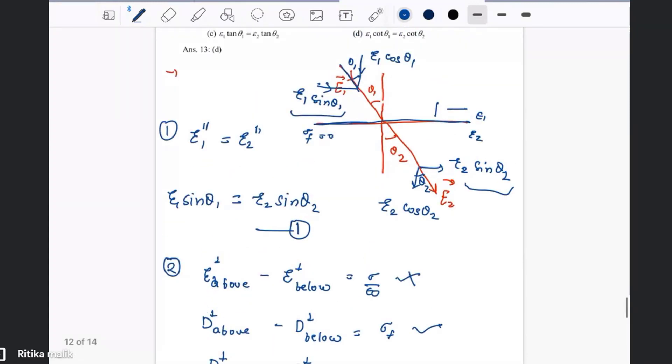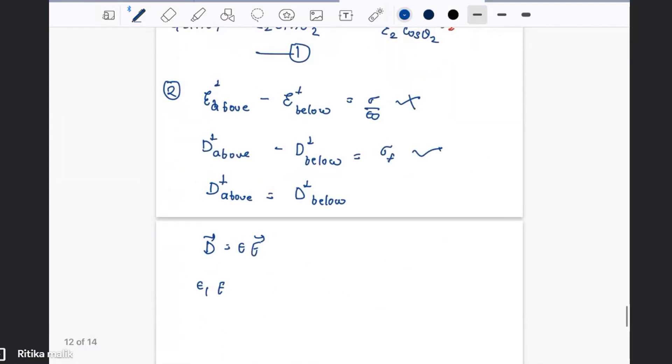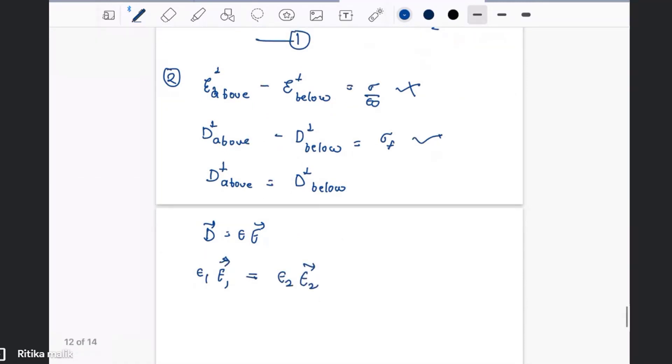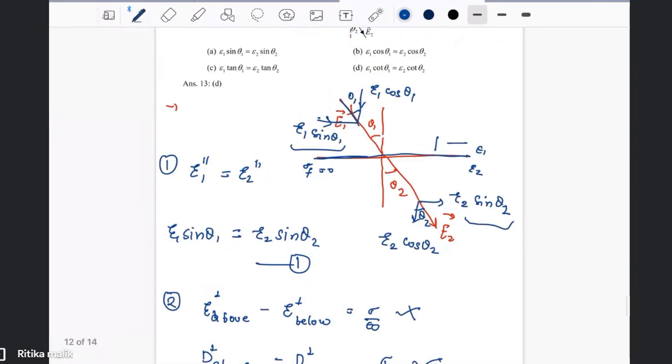So we just use epsilon 1 E1 equals E2 epsilon 2. We have to look for only the perpendicular component. The perpendicular component is cos theta 1, so epsilon 1 E1 cos theta 1